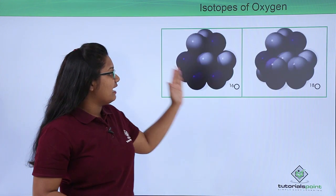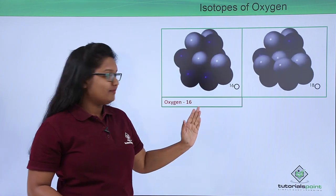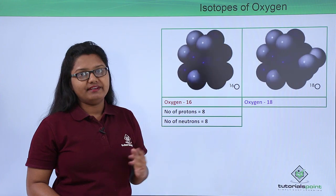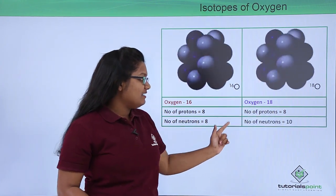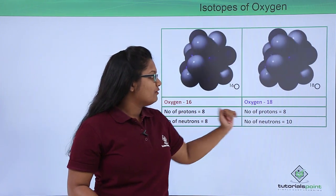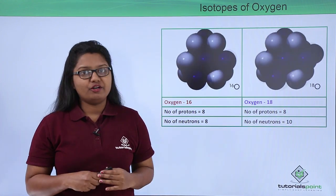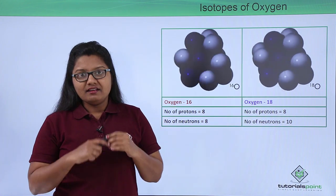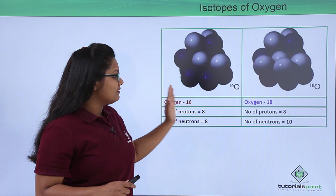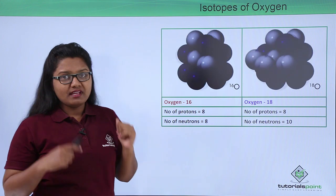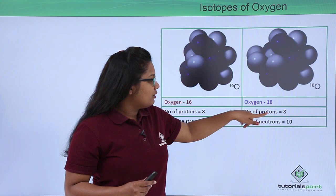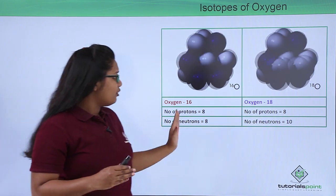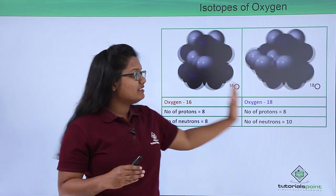In nature there are two varieties of oxygen atom: oxygen-16 and oxygen-18. Oxygen-16 has 8 protons and 8 neutrons, whereas oxygen-18 has 8 protons and 10 neutrons. Oxygen-18 has 2 extra neutrons compared to oxygen-16. So the mass number of oxygen-16 is 16 (8 protons + 8 neutrons), and for oxygen-18 the mass number is 18 (8 protons + 10 neutrons). It is the number of neutrons which makes the difference in the mass numbers of these two oxygen atoms.